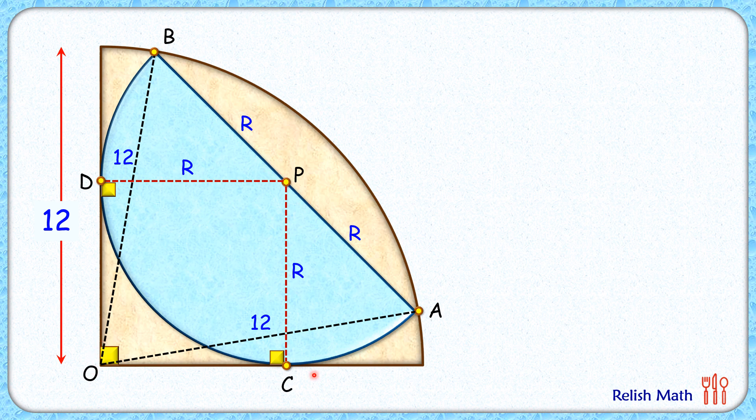Now if we observe this figure OCPD, all the angles are 90 degrees and adjacent sides are equal. Since angles are 90, it's a rectangle. Since adjacent sides are equal, it's a square. In a square we know that this OP line, that's the diagonal of the square, is given by √2R.